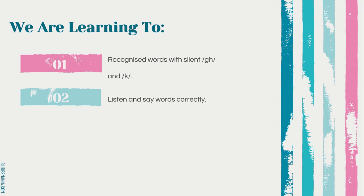We have two learning objectives for today. First, we are going to recognize words with silent GH and K. Afterward, you are going to listen and say words given correctly. Mengenal pasti perkataan yang mempunyai silent GH and K, and dengar dan sebut perkataan yang diberi.